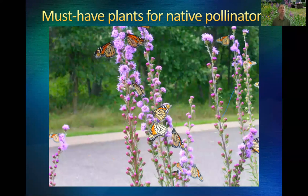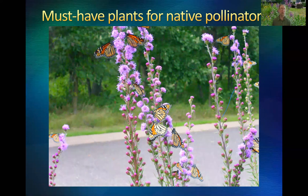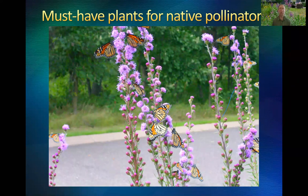You've got to have blazing star, and very specifically, if you can grow meadow blazing star — Liatris ligulistylis — that's the one that attracts monarchs the best. If you have other blazing stars in bloom at the same time, the monarchs are still going to flock to the meadow blazing star. It's also a gorgeous plant that attracts a lot of other pollinators besides.